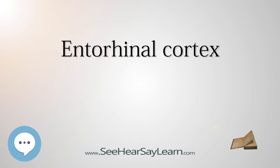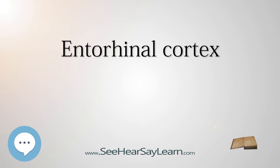In 2005, it was discovered that the entorhinal cortex contains a neural map of the spatial environment in rats. In 2014, John O'Keefe, May-Britt Moser, and Edvard Moser received the Nobel Prize for Physiology or Medicine, partly because of this discovery. Neurons in the lateral entorhinal cortex exhibit little spatial selectivity, whereas neurons of the medial entorhinal cortex exhibit multiple place fields that are arranged in a hexagonal pattern and are therefore called grid cells. These fields and the spacing between fields increase from the dorsolateral to the ventromedial region.